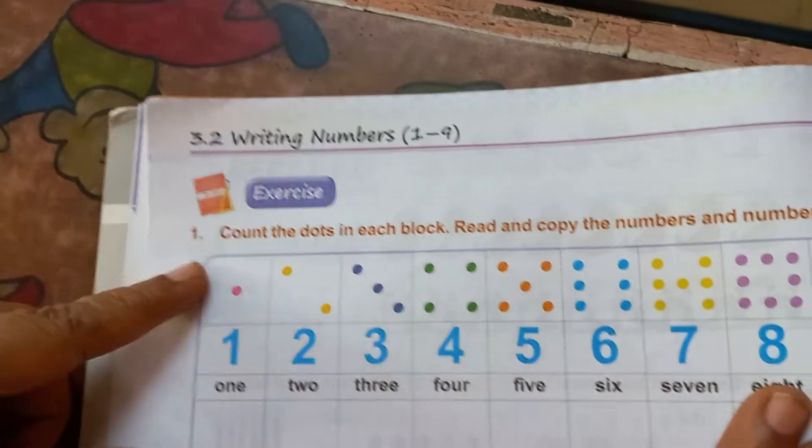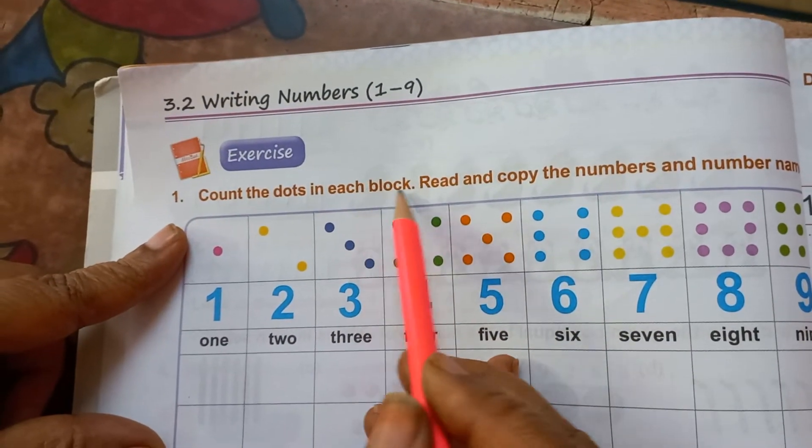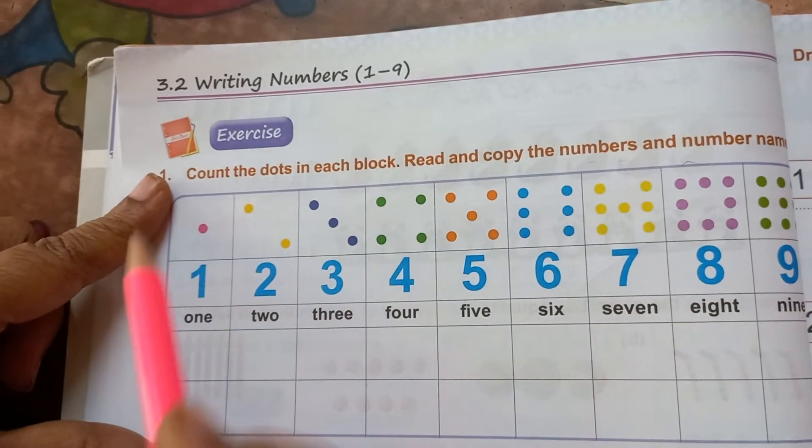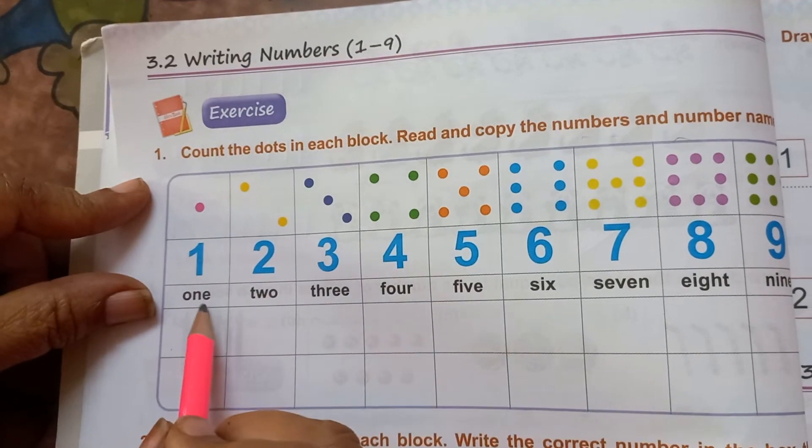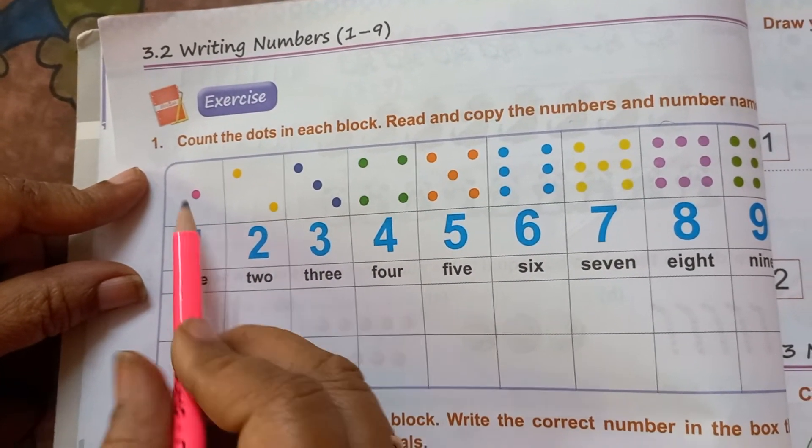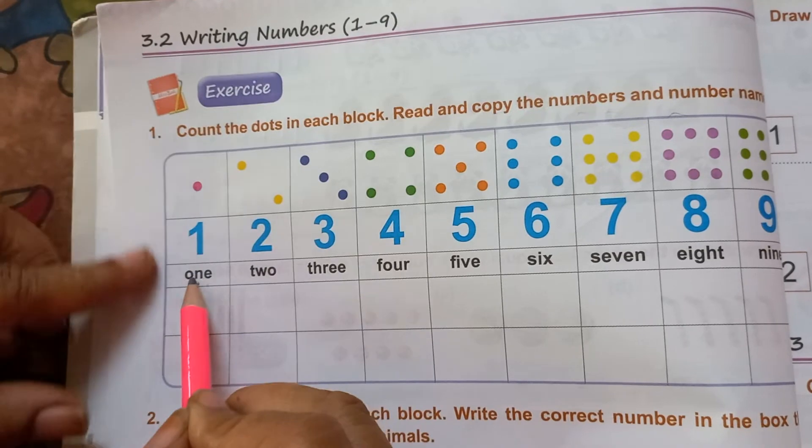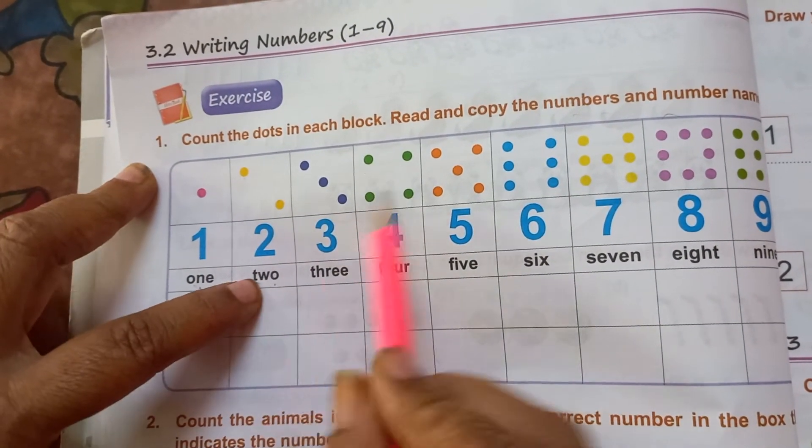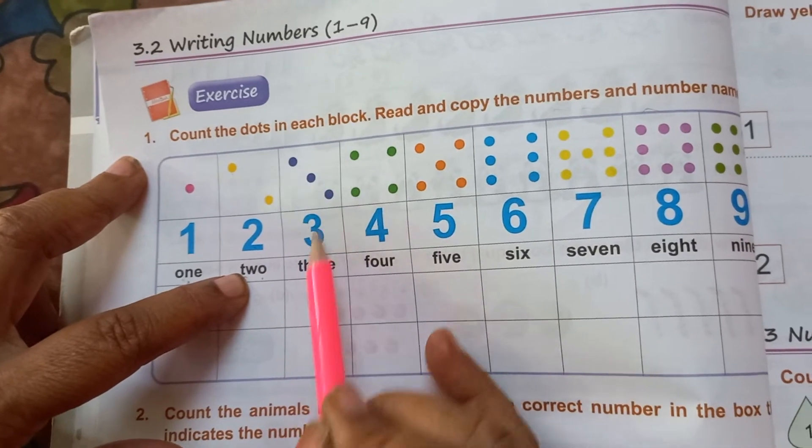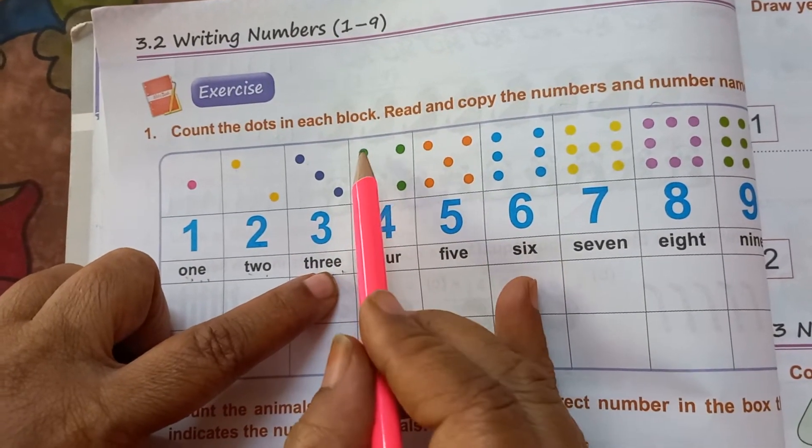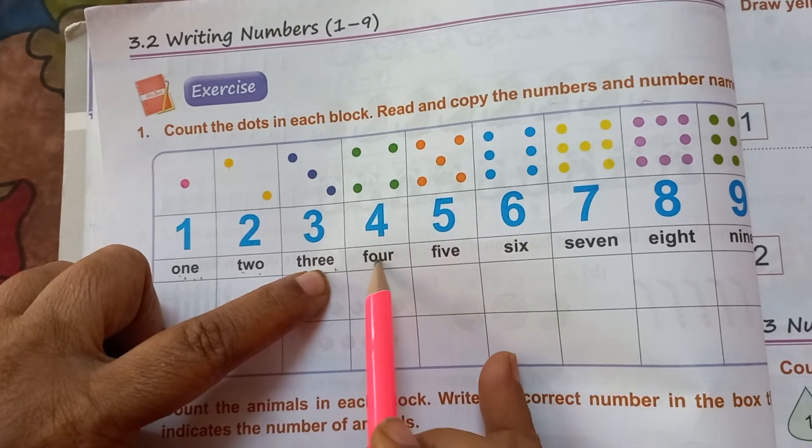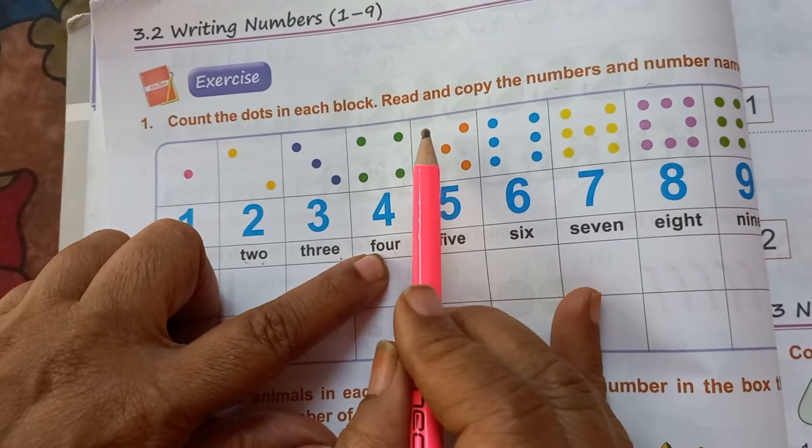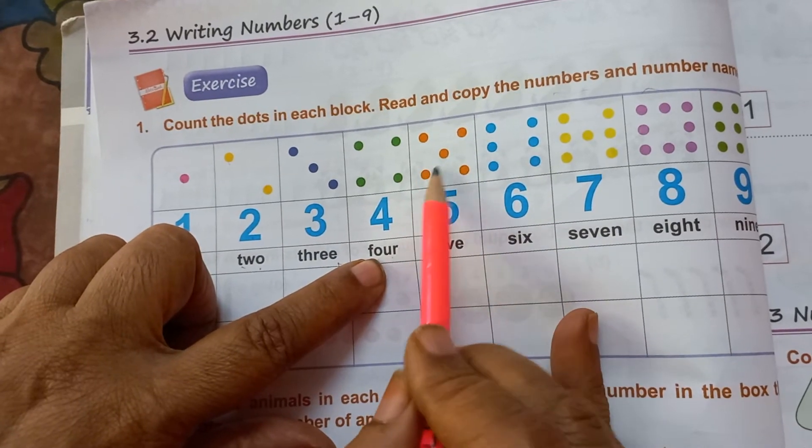Then count the dots in each block. Read and copy the numbers and the number names. See you have to learn the spellings. These are called as number names. Here 1. So O, N, E, one. One, 2. T, W, O, two. One, 2, 3. T, H, R, E, three. One, 2, 3, 4. So F, O, U, R, four. These are number names.